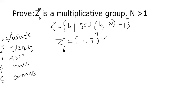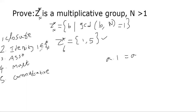Let me show you the simple ones first. Identity is clear, because by definition GCD(1, n) is one. Therefore, one must be an element in the group Z*n — one belongs to Z*n. Therefore, we say one is the identity element. Furthermore, all elements that you multiply with one, you get the element back. So one is the identity element.